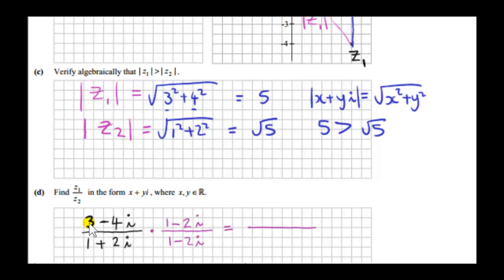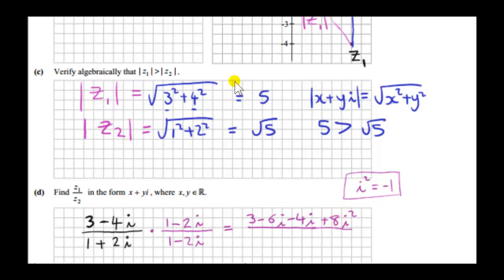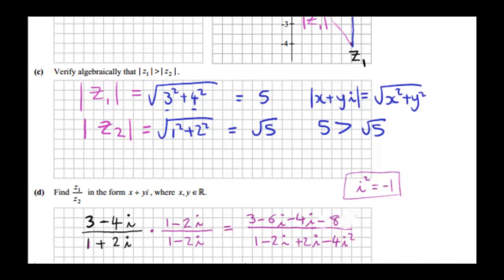We multiply 3 by 1 minus 2i to get 3 minus 6i. Then we multiply minus 4i by 1 minus 2i to get minus 4i. Next we have minus 4i by minus 2i, that's plus 8i squared. Since i squared is minus 1, we write 8i squared as 8 times minus 1, which is minus 8. In the denominator we multiply 1 by 1 minus 2i to get 1 minus 2i. Then plus 2i by minus 2i is minus 4i squared, and since i squared is minus 1, we have minus 4 times minus 1, which gives us plus 4.